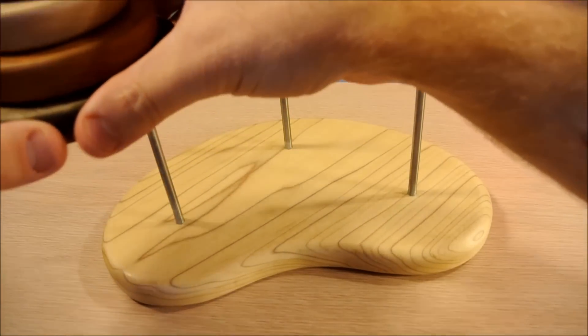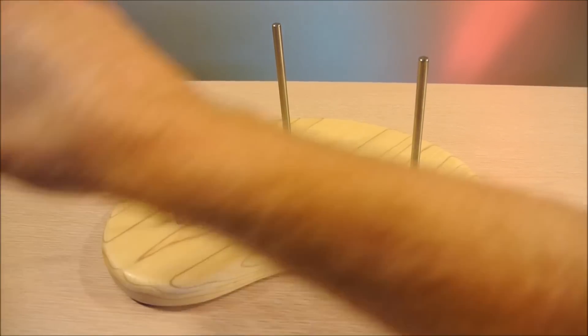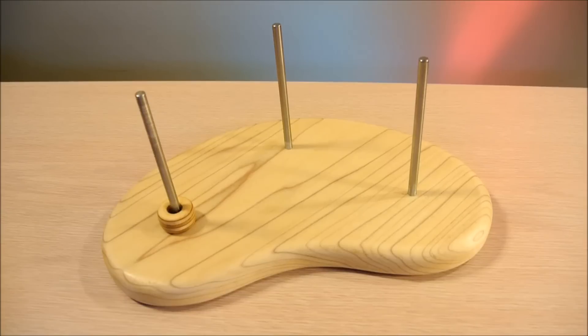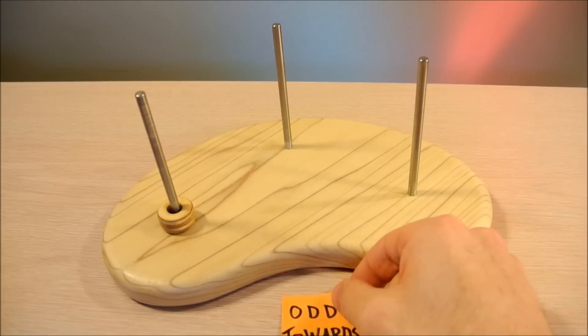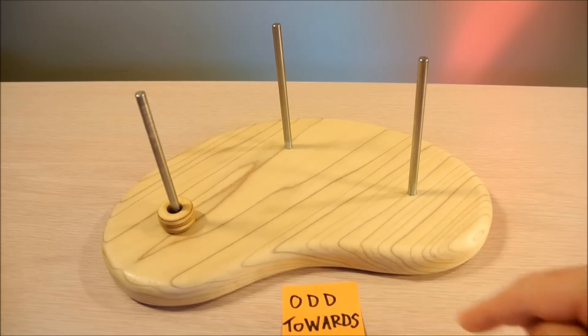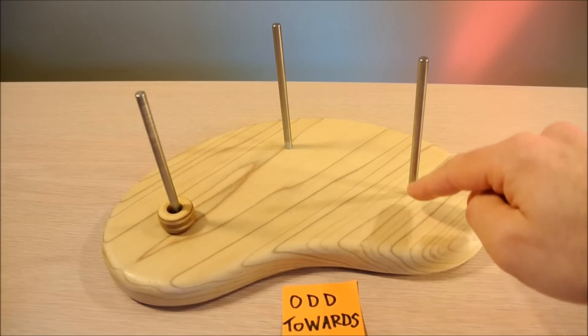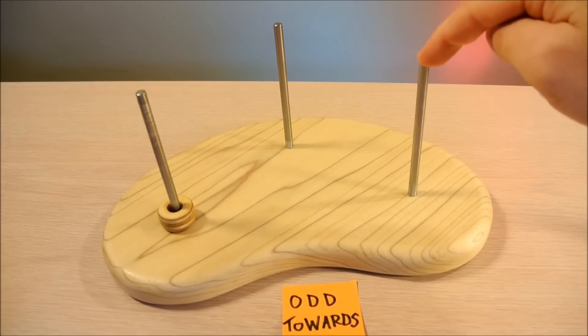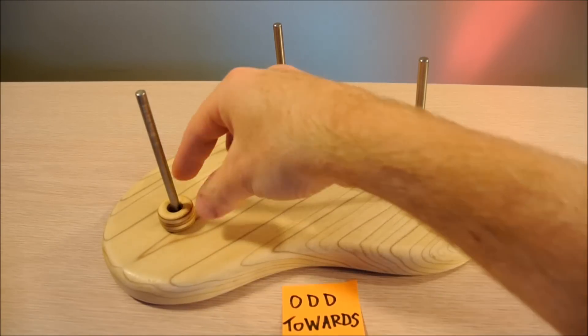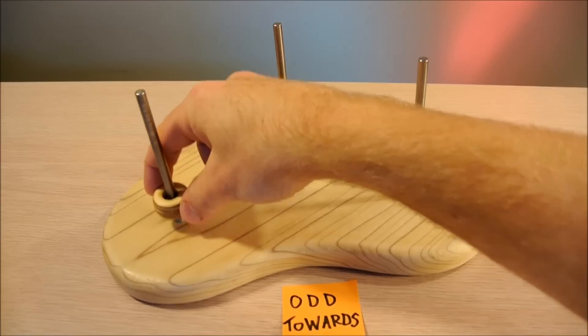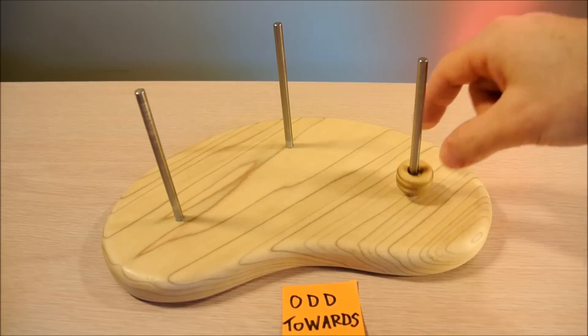So let's start with the easiest case which is one. We have an odd number and here's the rule: odd towards. Towards the goal, this being the goal, this being the start. Odd number of pieces, odd towards.